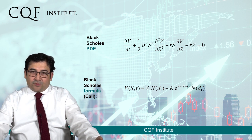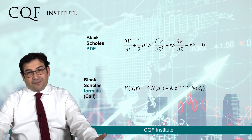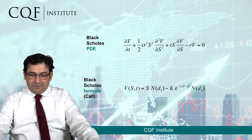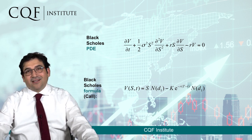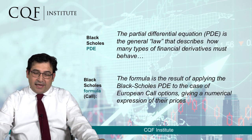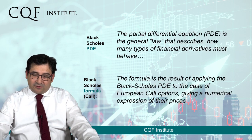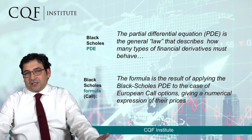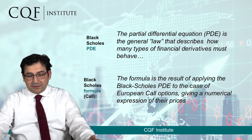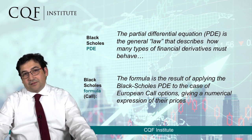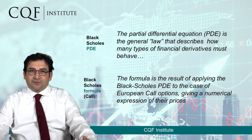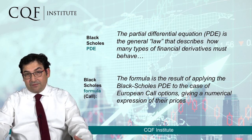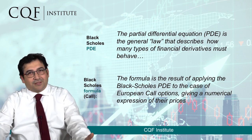They are both called Black-Scholes, but they are very different. One represents the question; the other represents the answer. The Black-Scholes PDE is the general law that describes how many types of financial derivatives must behave — it's like Newton's law of derivatives, as it were.